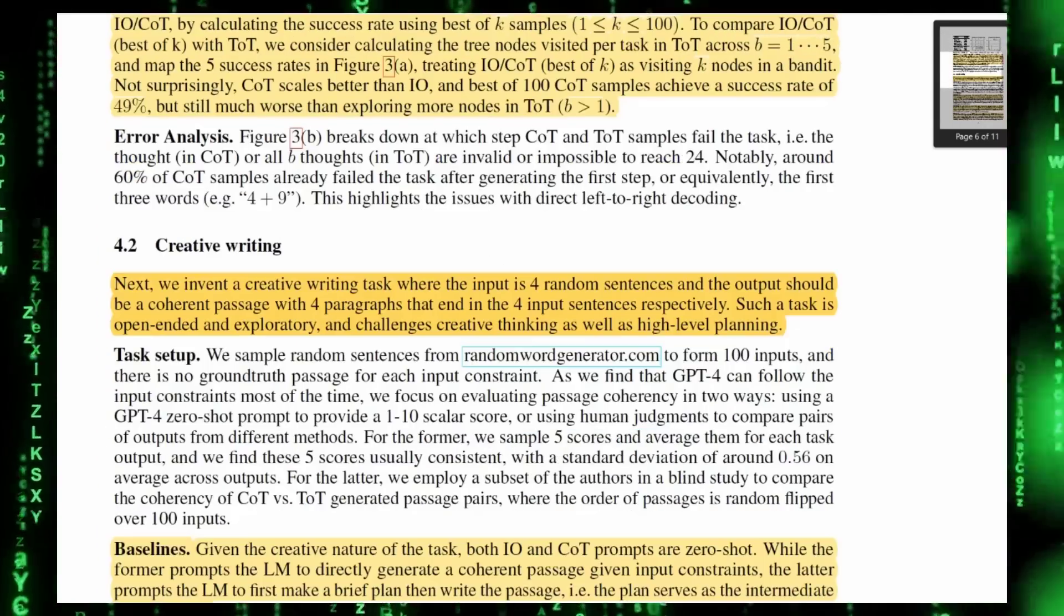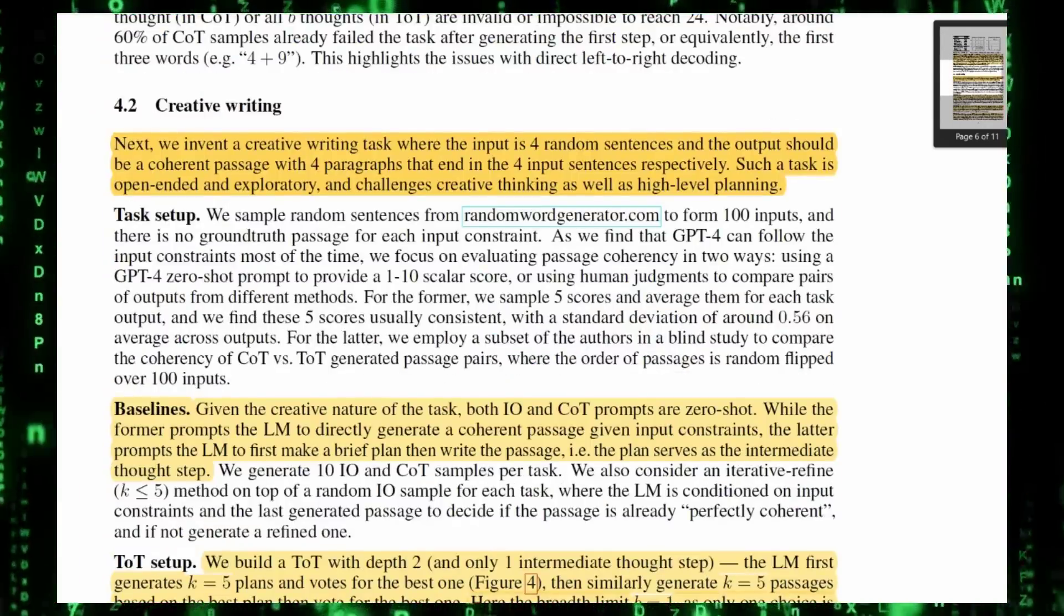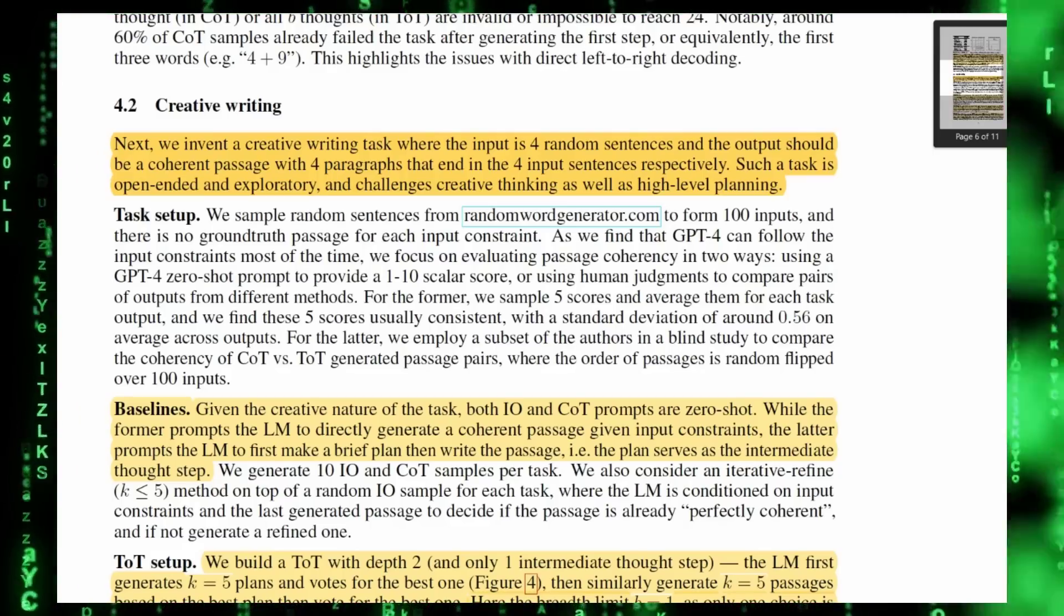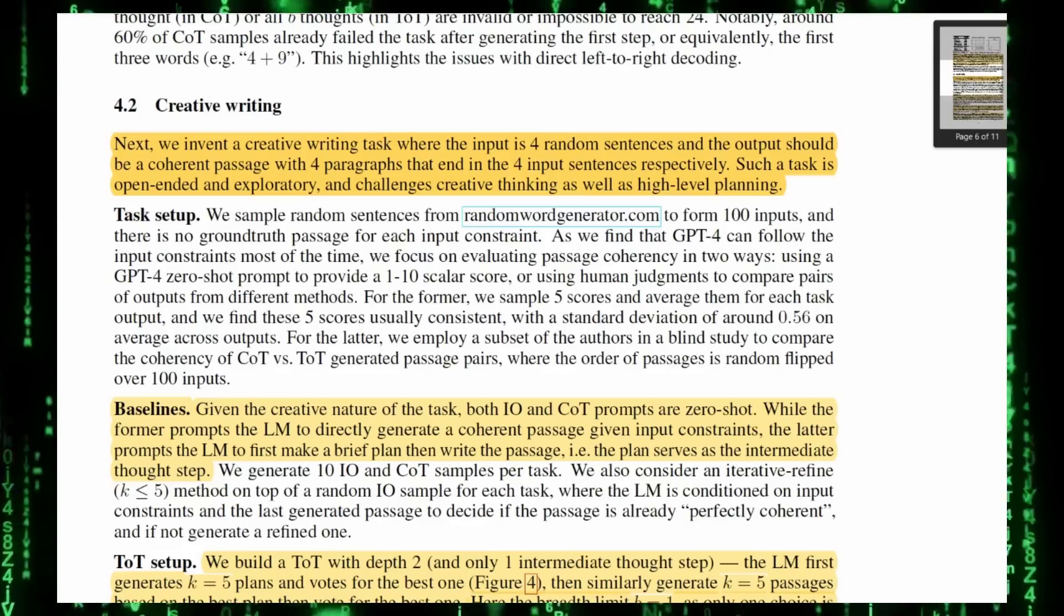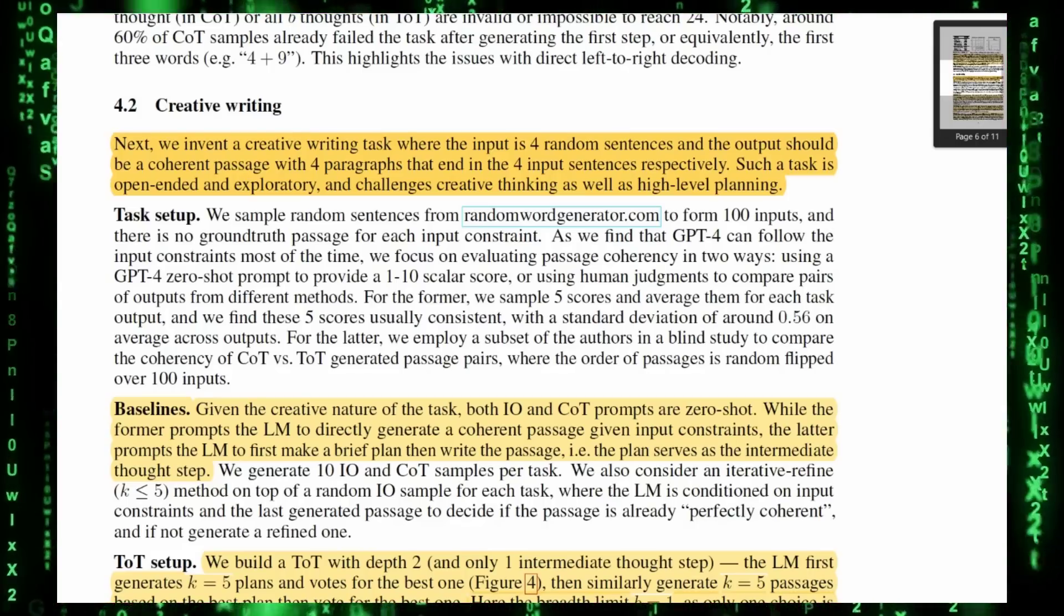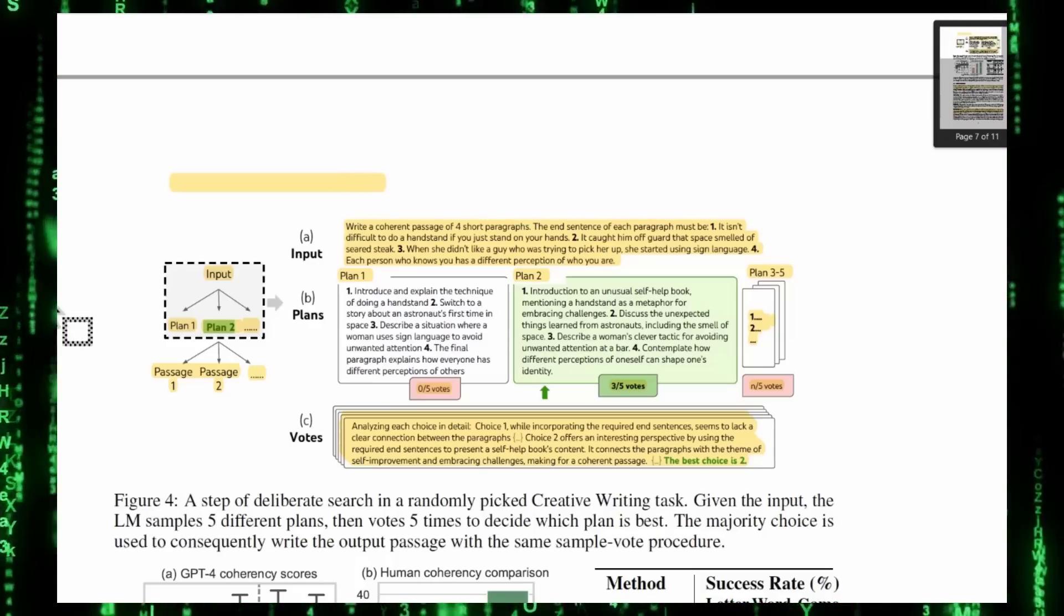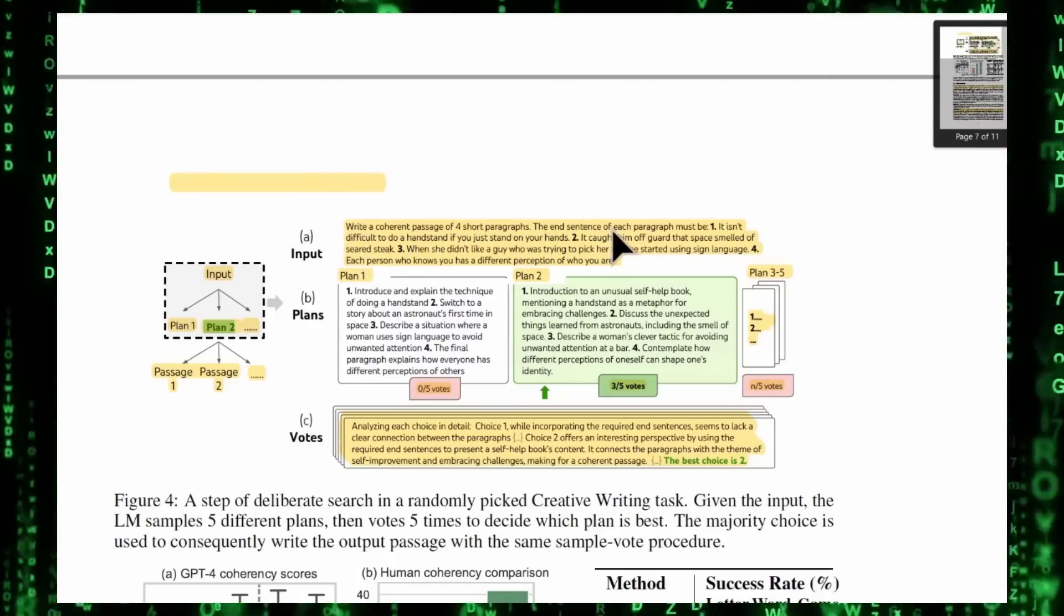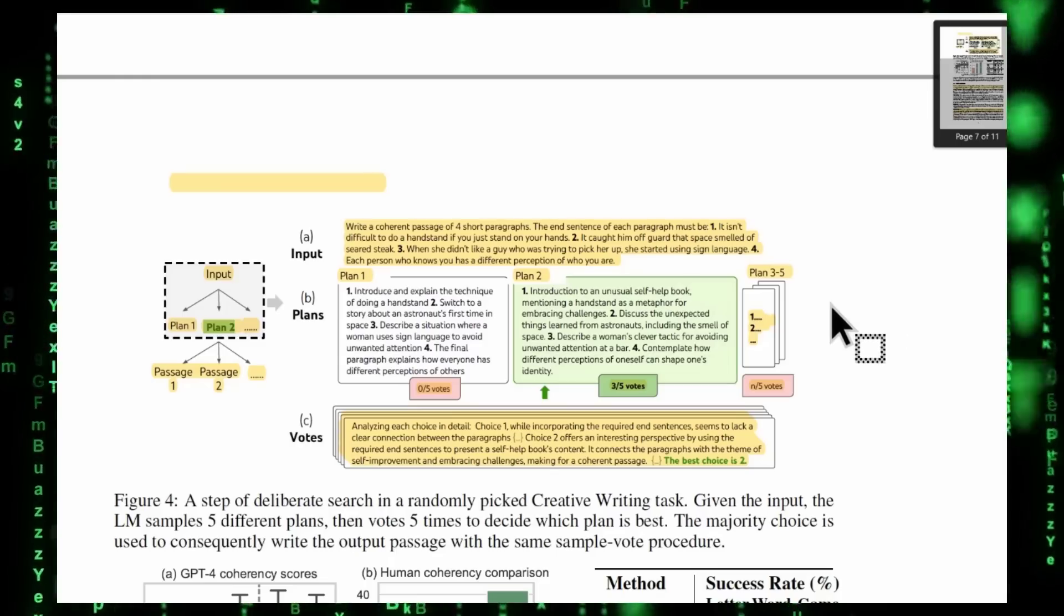Next, we're going to look at creative writing. Is this approach better for creative writing? So next, we invent a creative writing task where the input is 4 random sentences, and the output should be a coherent passage with 4 paragraphs that end in the 4 input sentences, respectively. Here's basically how that looks. It's given a task of write a coherent passage of 4 short paragraphs. The end sentence of each paragraph must be, and this is the 4 paragraphs that it randomly generated. 1. It isn't difficult to do a handstand if you just stand on your hands. That's true.